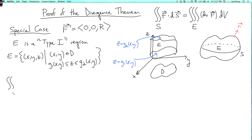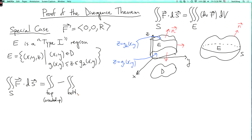Now let's calculate the double integral over S of F dot dS. We divide the boundary of E into three parts: the top, oriented upward (since the normal vector points outside the region); the bottom, oriented downward; and the side, oriented outward. So we have the integral over the top, minus the double integral over the bottom oriented up, plus the double integral over the side oriented out.